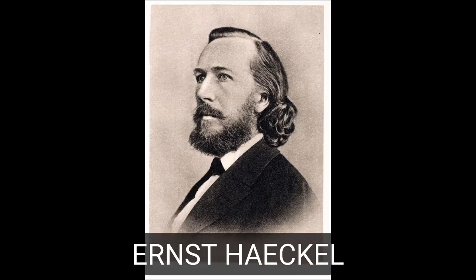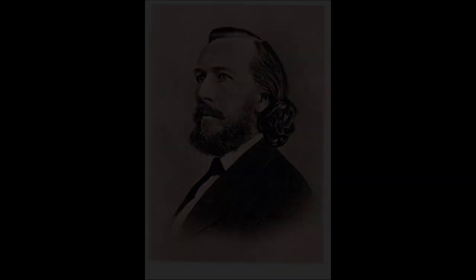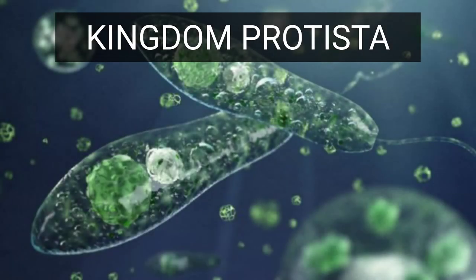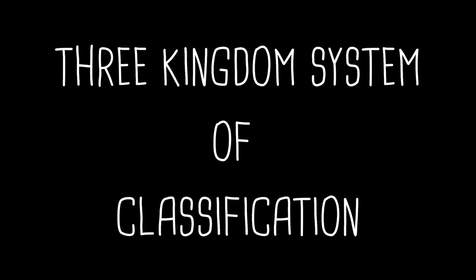To solve this problem, Ernest Haeckel, a German biologist and philosopher, created a third kingdom called Protista, where he located all unicellular organisms. This classification is also known as the three kingdom system of classification.